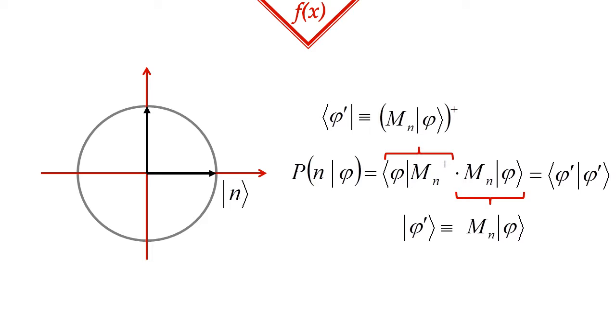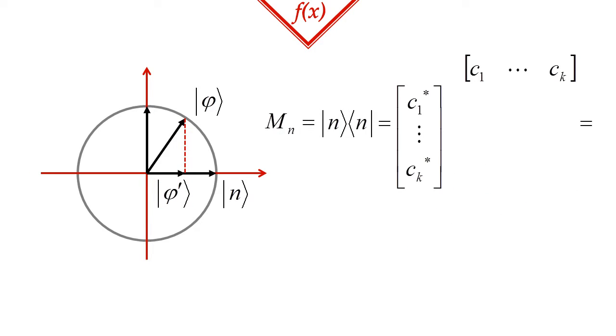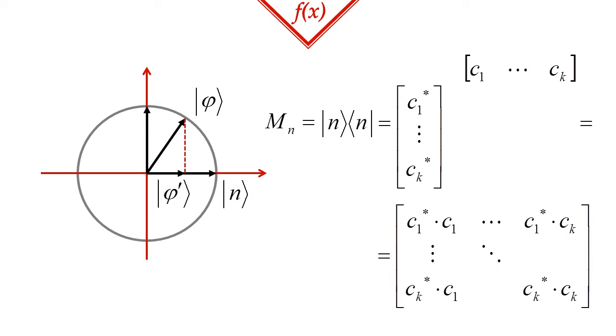But what is this M_n |φ⟩ vector? Essentially it's |φ⟩ projected onto a ray of the Hilbert space, and that ray corresponds to the nth basis vector.